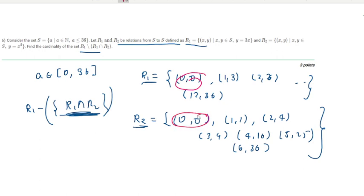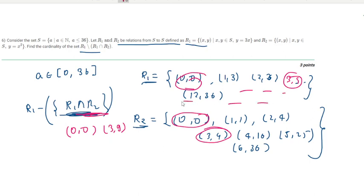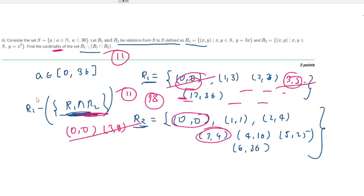We need the cardinality of R1 minus the intersection of R1 and R2. R1 ∩ R2 contains (0,0) and (3,9) — two elements. R1 has 13 total elements. Removing the 2 common elements gives 13 − 2 = 11. So the cardinality of the final set is 11.